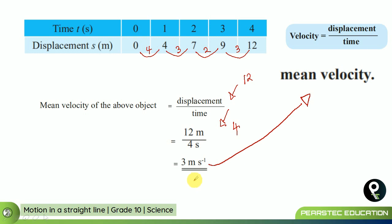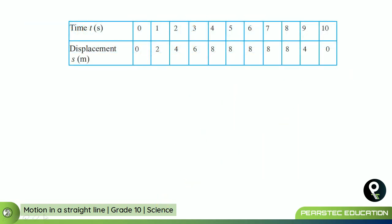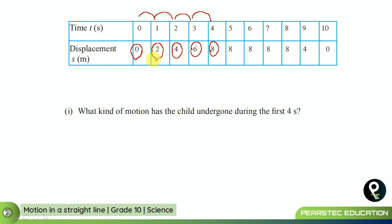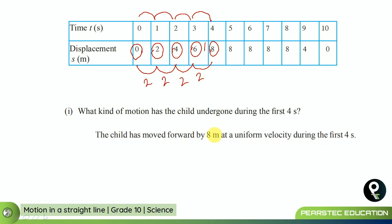We have a question about a child's motion. Looking at the chart, what kind of motion has the child undergone during the first 4 seconds? From the first second through to the fourth second, the child displaces 2 meters each second — 0 to 1, 1 to 2, 2 to 3, and 3 to 4 seconds. The motion is equal over this period. So the child has moved forward by 8 meters at a uniform velocity during the first 4 seconds.